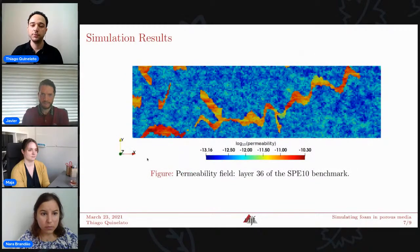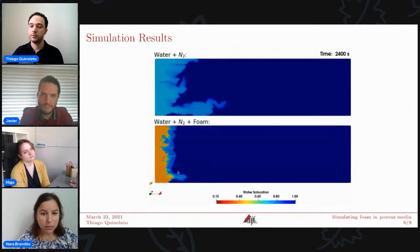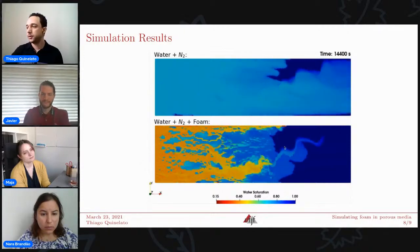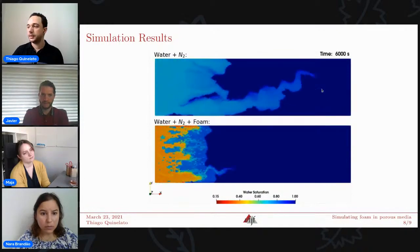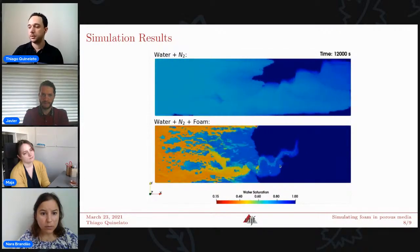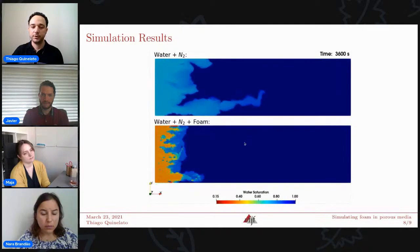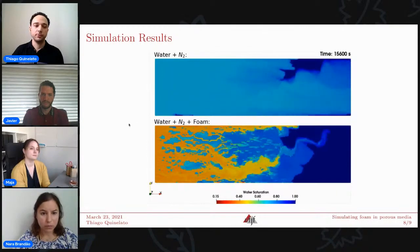For a second example, we use the layer 36 of the SPE 10 benchmark. And this layer shows a clear preferential path here. The initial and boundary conditions here are the same as before. So, again, we can see that the gas front in the case with foam is much more regular than in the case without foam. And the gas breakthrough occurs later. And although some fluids still take this preferential path, we can see that the sweep efficiency was greatly improved by the usage of foam here compared with the no foam case.